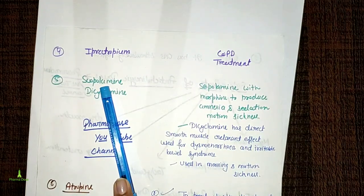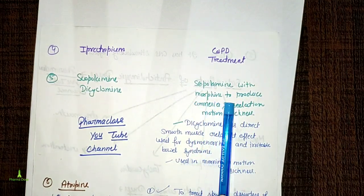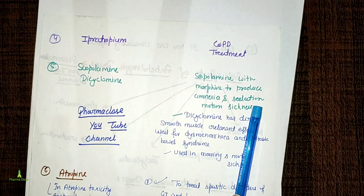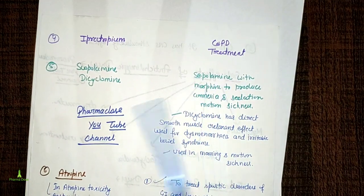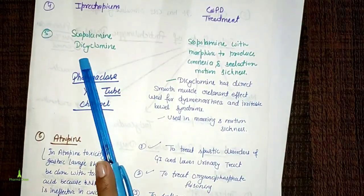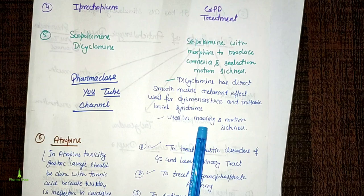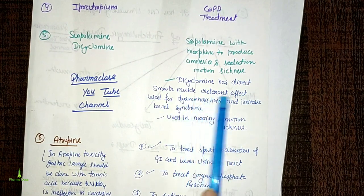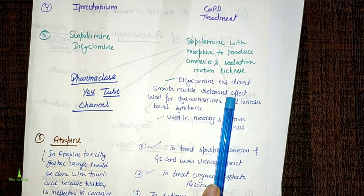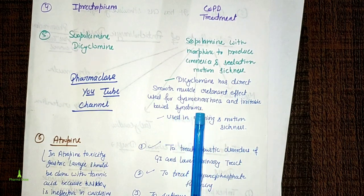Scopolamine — another name is hyoscine — is used with morphine to produce amnesia, sedation, and to treat motion sickness. Dicyclomine is another drug used for motion sickness treatment. It has smooth muscle direct relaxant properties and is used in dysmenorrhea and irritable bowel syndrome.